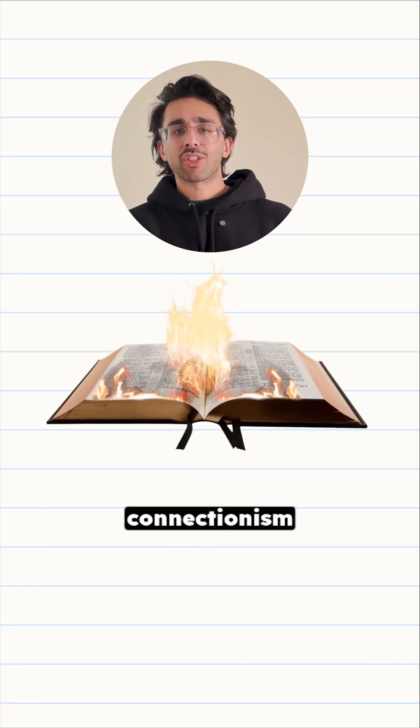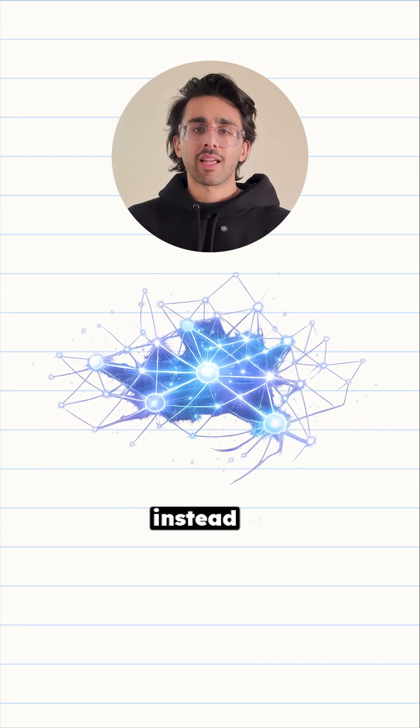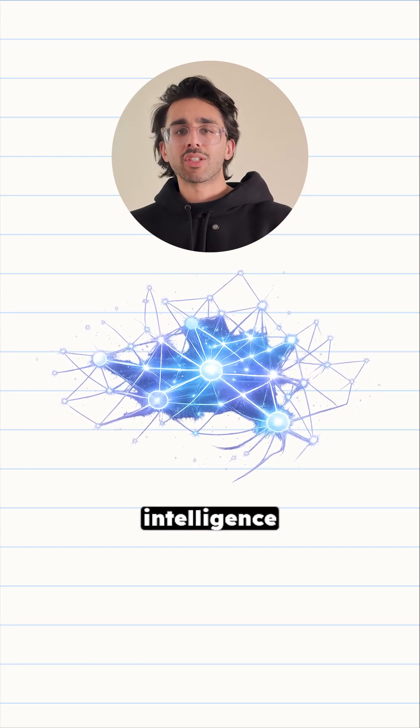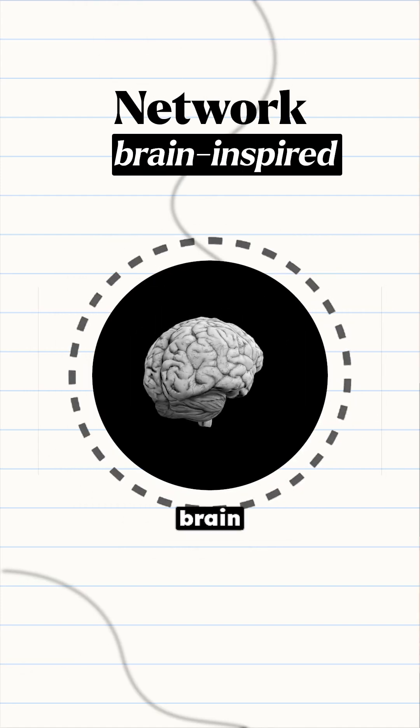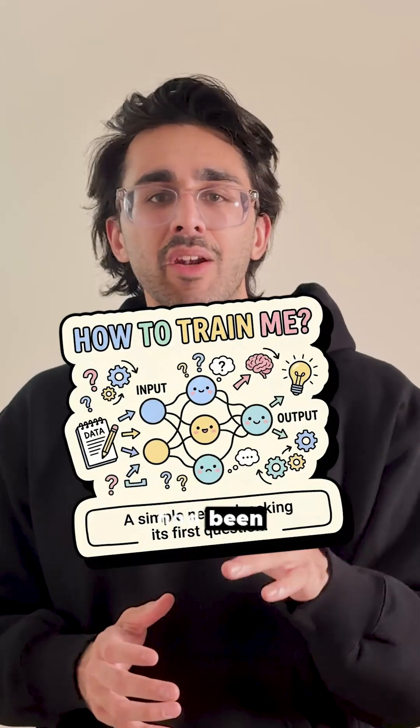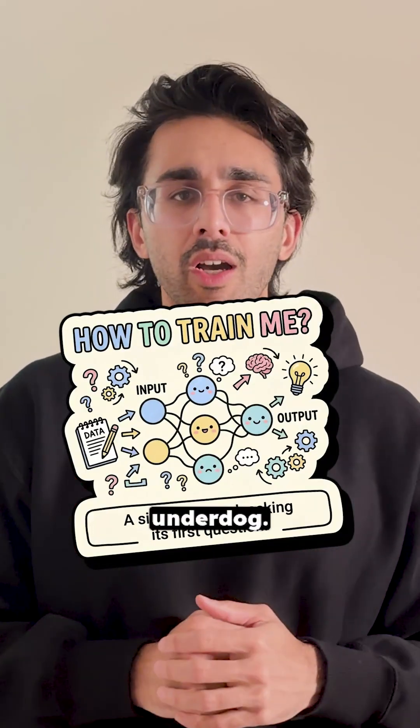The new old idea was connectionism, artificial neural networks. Instead of top-down rules, what if intelligence could emerge from a bottom-up network of simple brain-inspired neurons? This idea had been around since the 50s, but it was an underdog. And why?